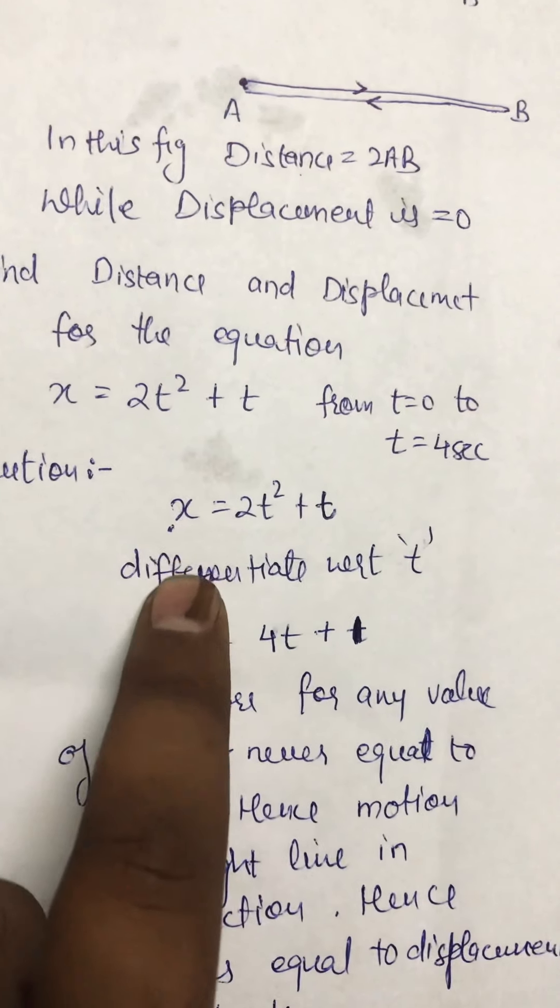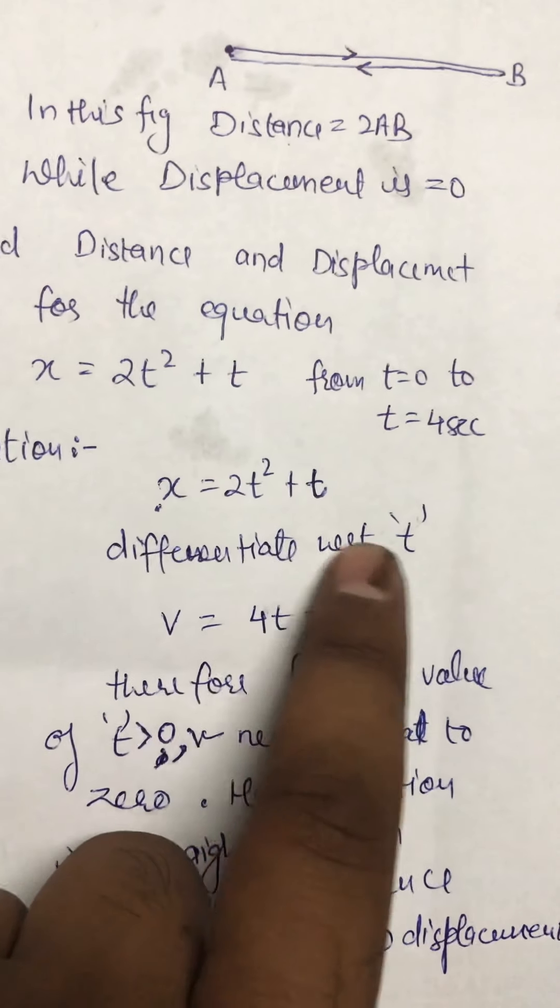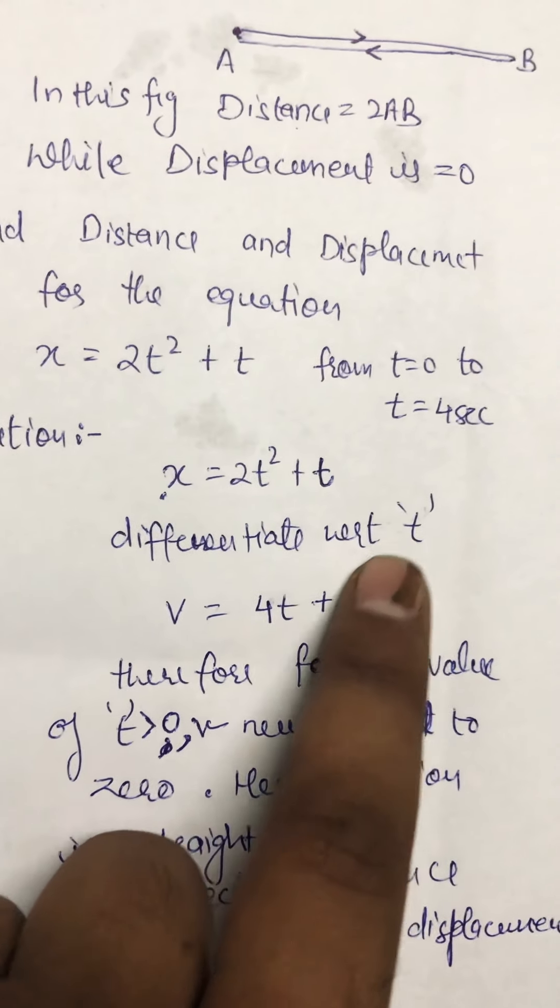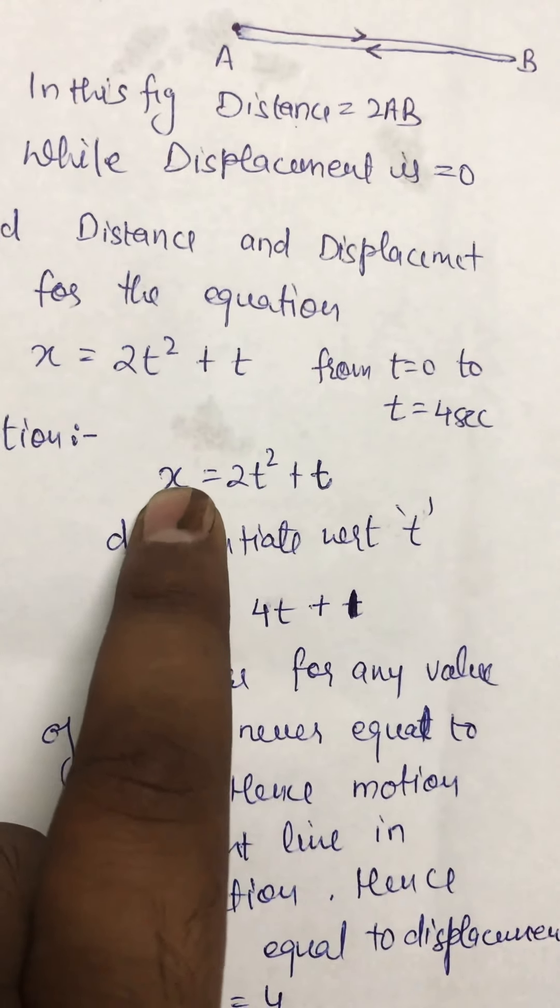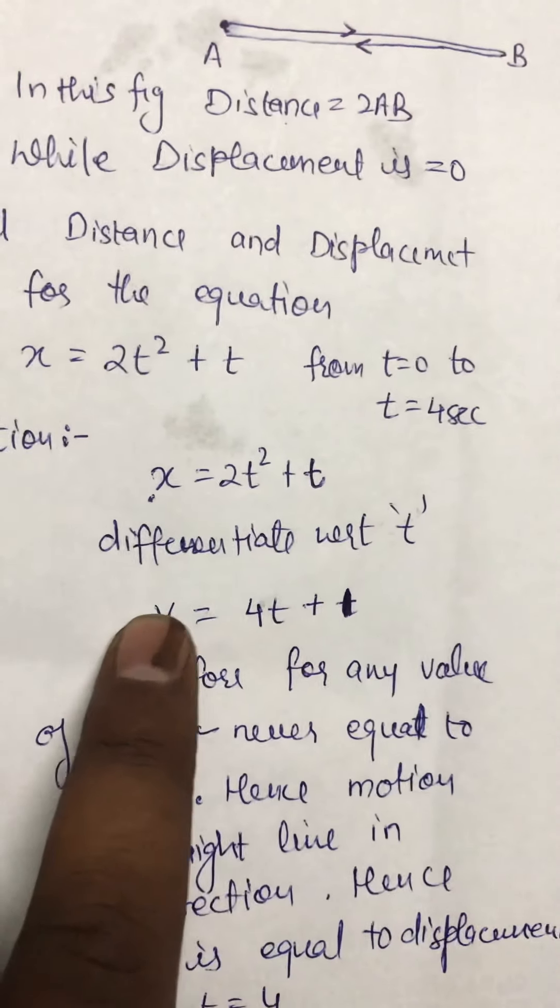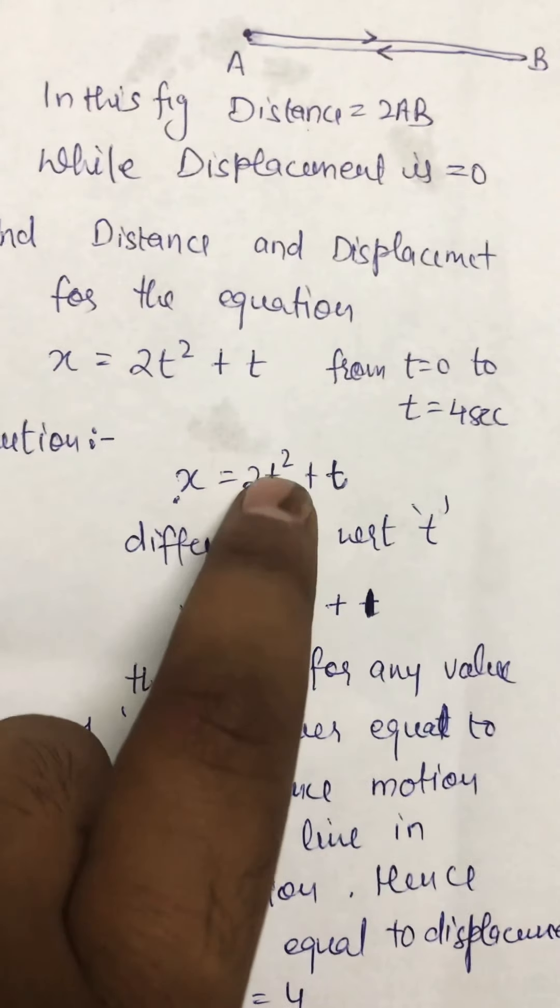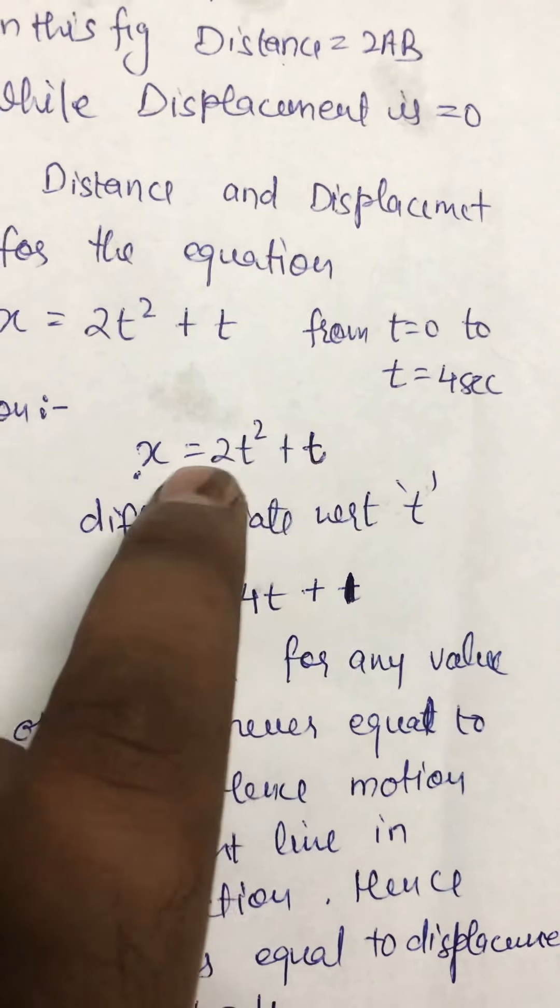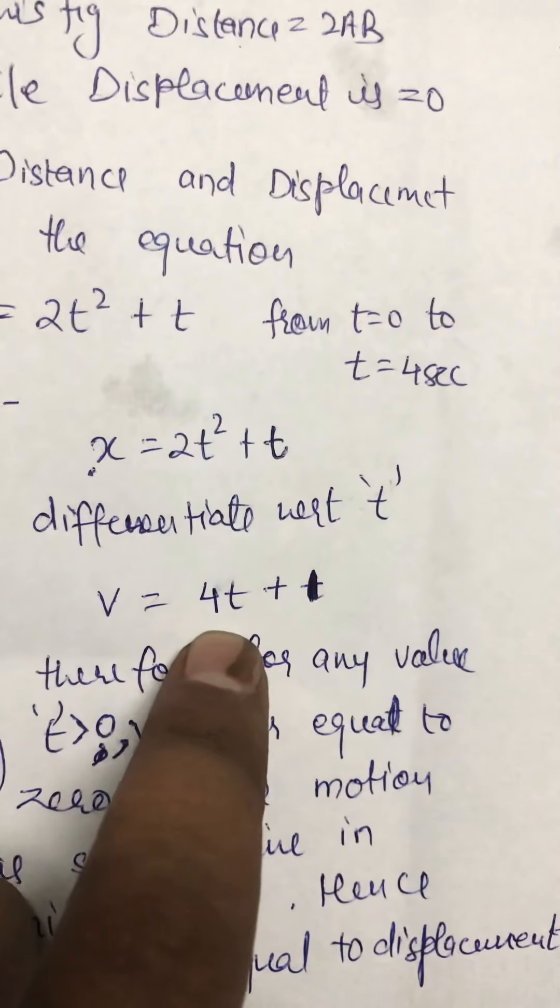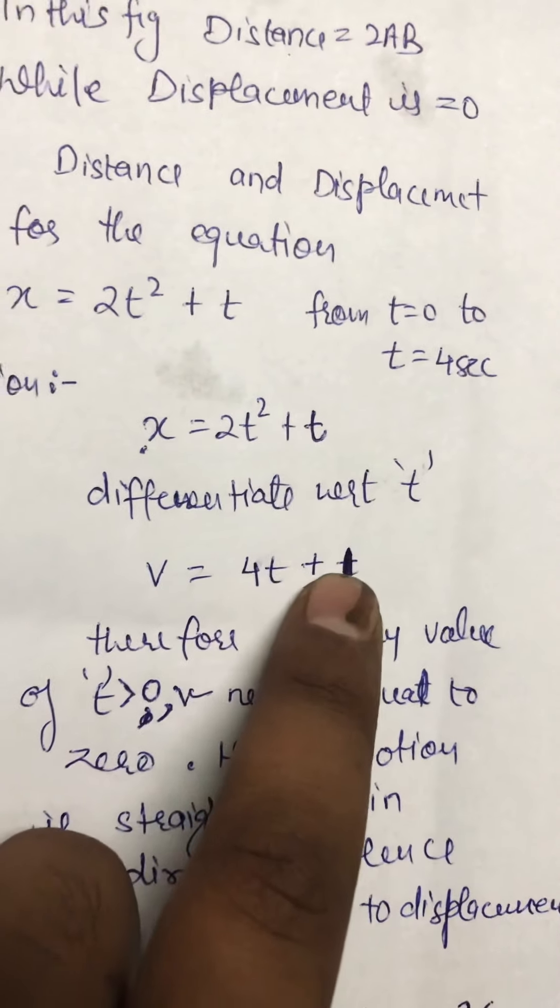Let us differentiate this equation with respect to time to calculate velocity at any instant. Differentiation of displacement x with respect to time is velocity. Differentiating 2t², we get 4t. Differentiation of t equals 1. So v = 4t + 1.